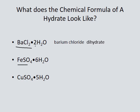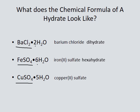The next example, we've got iron sulfate and six water molecules, which gives us hexahydrate. And in our last example, we've got copper sulfate and five water molecules, which gives us a pentahydrate.